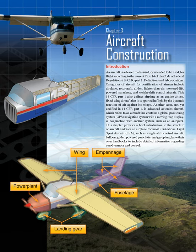Title 14 CFR Part 1 also defines airplane as an engine-driven, fixed-wing aircraft that is supported in flight by the dynamic reaction of air against its wings. Another term, not yet codified in 14 CFR Part 1, is advanced avionics aircraft, which refers to an aircraft that contains a global positioning system, GPS, navigation system with a moving map display.